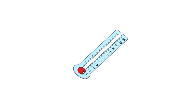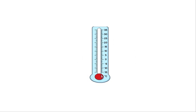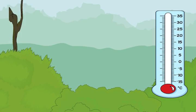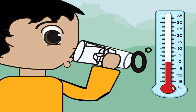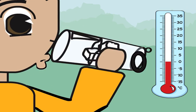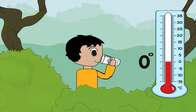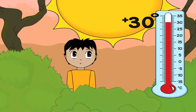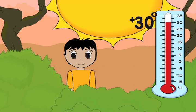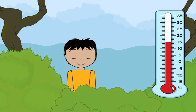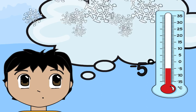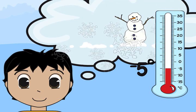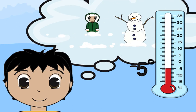A thermometer also works like a piece of a number line. This thermometer shows zero degrees Celsius, the freezing point of water. On a Celsius thermometer, positive numbers show temperatures above freezing. Negative numbers show temperatures below freezing. Negative five degrees — brrr, that's cold!